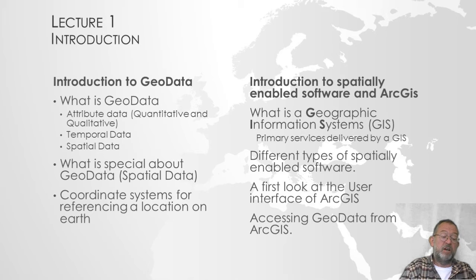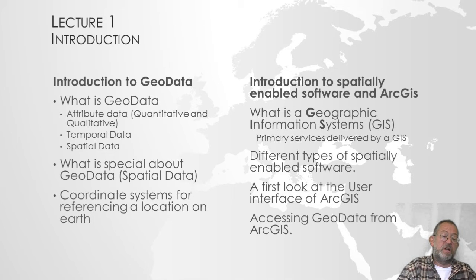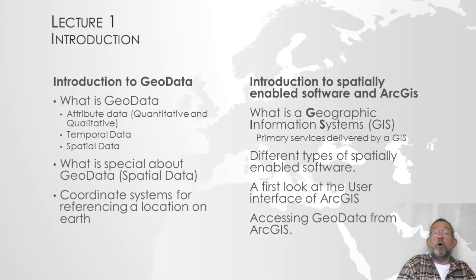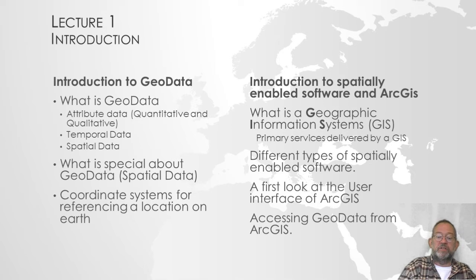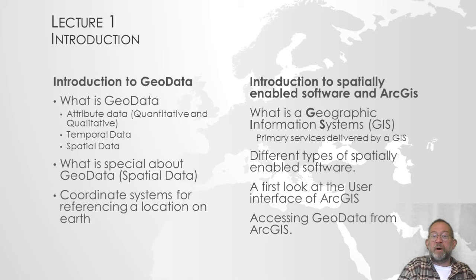In the first lecture we will start with: what is geodata? We'll talk about attribute data — the data that describes what we've called the 'what' data: what is the name of a specific location, how many people live at a specific location. We'll talk about both qualitative and quantitative attribute data. We'll talk about temporal data — when was this observation, or when were there so and so many people present at this location? And of course the most important part is the spatial data — the where: where is the road called this or that, or where do we have this or that amount of accidents. Then we'll have to talk about what is special about spatial data or geodata — what sets it apart from any other type of data.